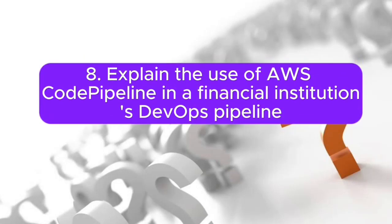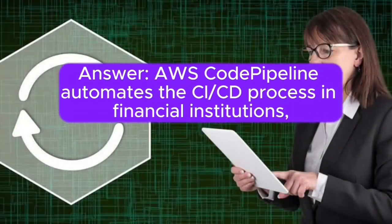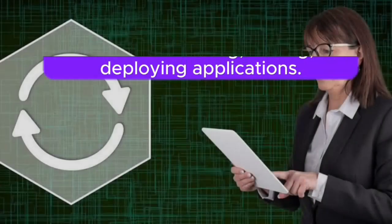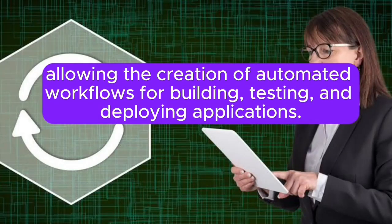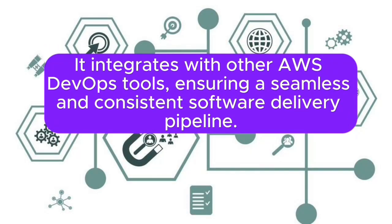Question 8: Explain the use of AWS CodePipeline in a financial institution's DevOps pipeline for automating and orchestrating continuous integration and continuous delivery (CI/CD). Answer: AWS CodePipeline automates the CI/CD process in financial institutions, allowing the creation of automated workflows for building, testing, and deploying applications. It integrates with other AWS DevOps tools, ensuring a seamless and consistent software delivery pipeline.